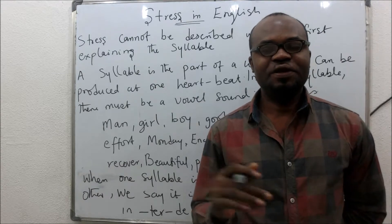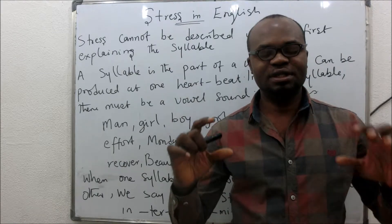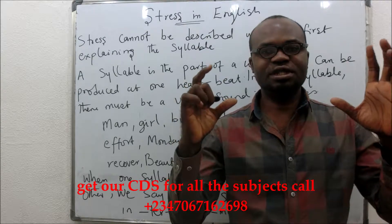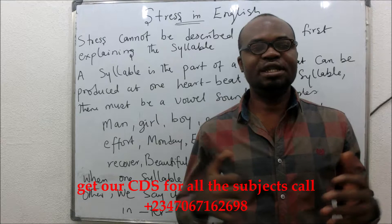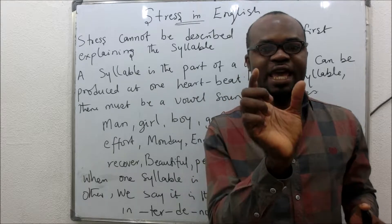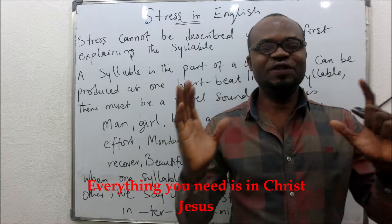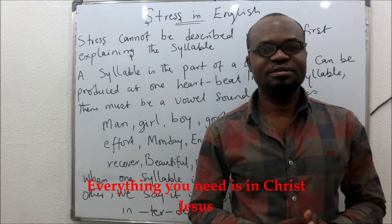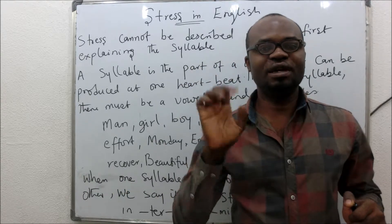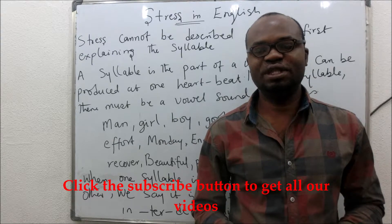For you to understand stress very well, first of all you need to know about syllable. We need to discuss syllable. What is a syllable? When you pronounce an English word, the sound or the pronunciation that is done in a go, we call it a syllable. The part of the word that you can pronounce in one single go is a syllable. We are going to demonstrate this with an example.